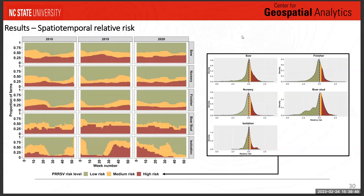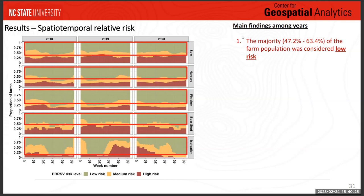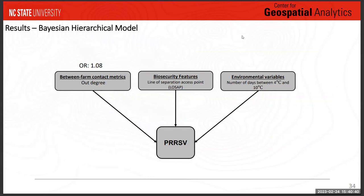For our spatiotemporal relative risk, each column in the plot is a different year, and each row is a different farm type. All bars represent the entire population in a week. We divided risk into low, medium, and high using quantile breaks of the relative risk distribution. Major findings: the majority of the farm population was considered low risk. Sow farms consistently had more high-risk farms than any other farm type. The majority of finisher farms were classified as low risk.